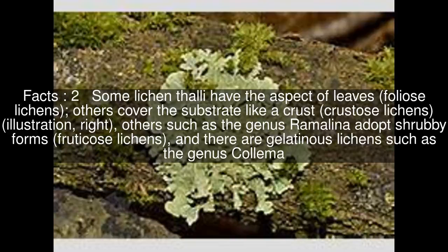Some lichen thalli have the aspect of leaves — foliose lichens. Others cover the substrate like a crust — crustose lichens. Others, such as the genus Ramelina, adopt shrubby forms — fruticose lichens. And there are gelatinous lichens such as the genus Collema.